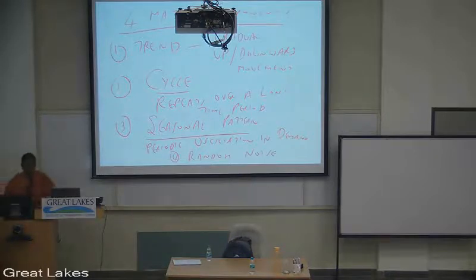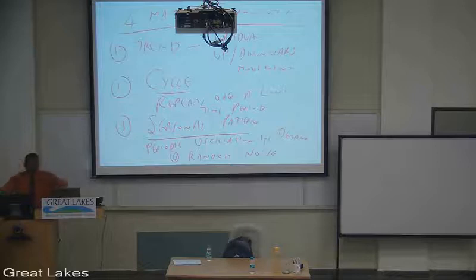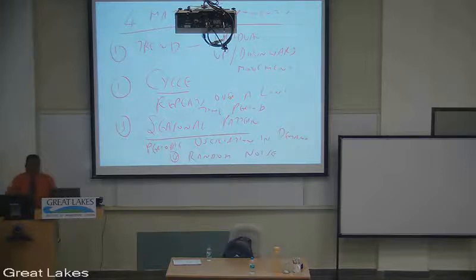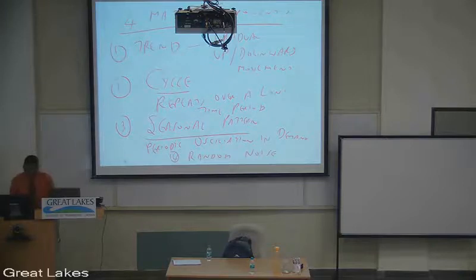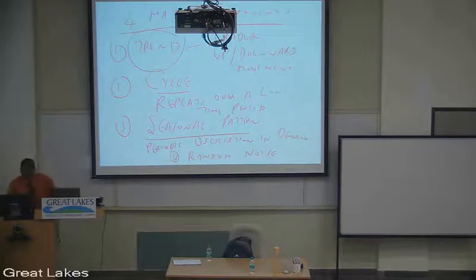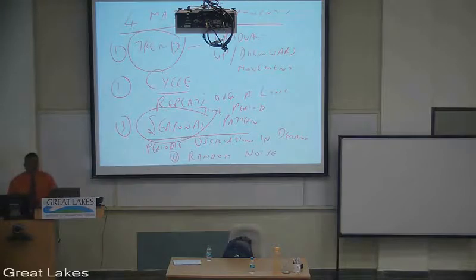So in a typical time series, these are four critical components that I want you to understand. Because when we actually work with data, initially we'll take the data as given and apply all the techniques. And then we'll come back and ask the question: What's going to happen if my data has any trends? What's going to happen if my data has any seasonal pattern? How do I go back and revise my forecasting tool?